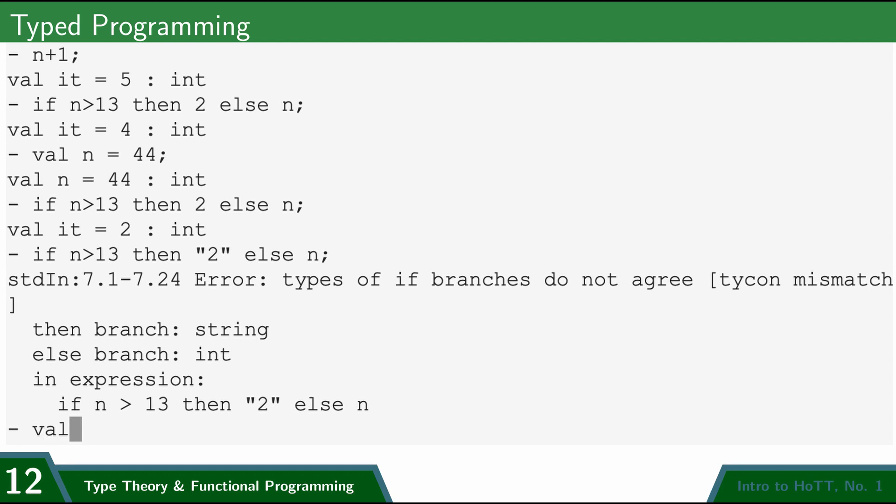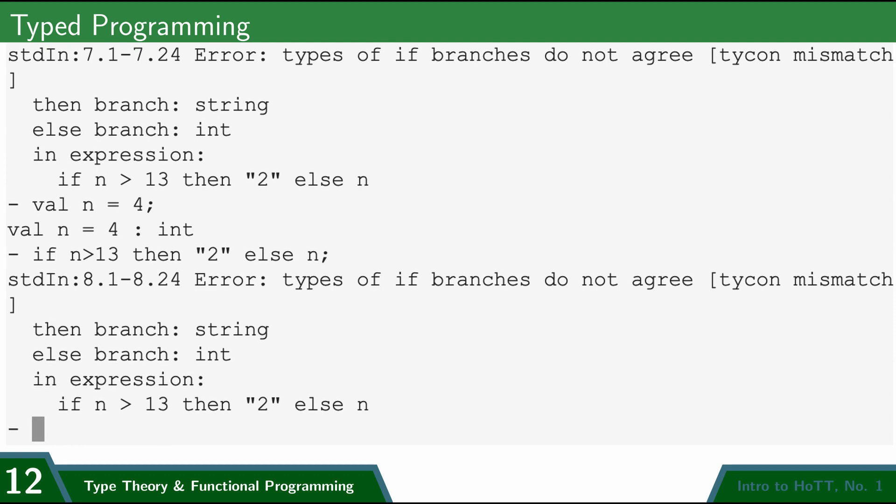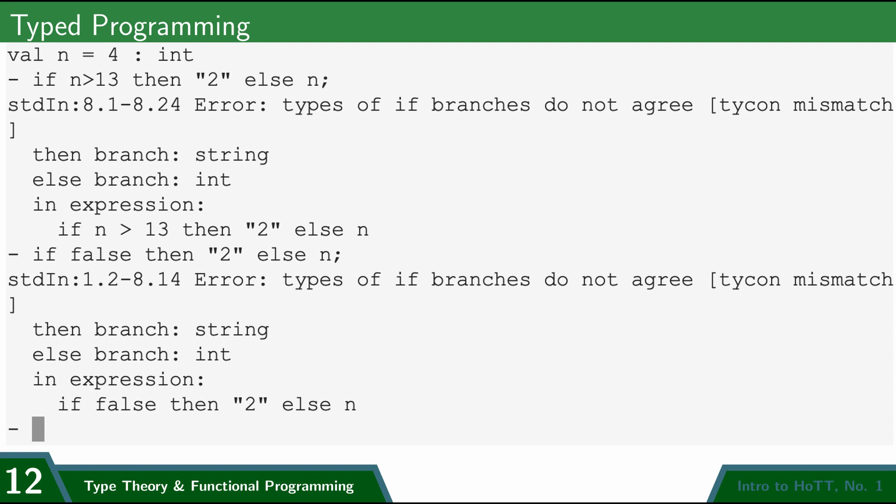Now notice that it doesn't matter whether n is greater than or equal to 13. It still refuses to compute this. I could even do if false, then quotation marks 2 else n. And so even though false is never going to be true, and so it's never going to go into this quotation marks 2 branch, it still does not type check and still does not allow it.